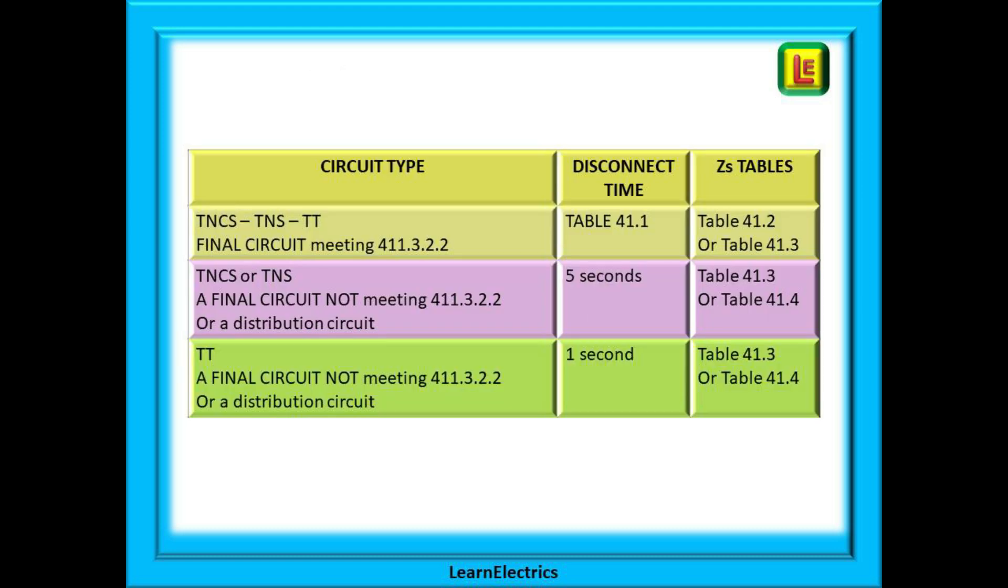We can summarize this in a table. For any final circuit that meets regulation 411.3.2.2 on page 64, use table 41.1.3.2.1 to find the disconnection time and the two ZS tables shown, which we will look at next. For any TN circuit that does not meet regulation 411.3.2.2, let's say an ATM circuit, then we apply 5 seconds as a disconnection time and we use the ZS tables shown in the middle row. And then, for a TT circuit not meeting the regulation 411.3.2.2, we apply a 1 second disconnection time and use the ZS tables indicated in the bottom row.